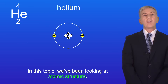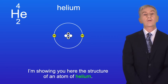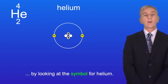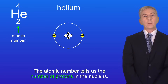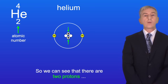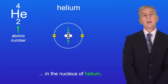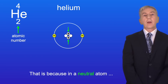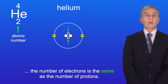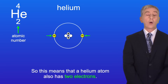In this topic we've been looking at atomic structure, and I'm showing you here the structure of an atom of helium. We can work out the structure of the helium atom by looking at the symbol for helium. Remember that the smaller of the two numbers is called the atomic number, which tells us the number of protons in the nucleus — so there are two protons in helium. The atomic number also tells us the number of electrons, because in a neutral atom the number of electrons equals the number of protons, so a helium atom has two electrons.